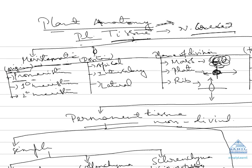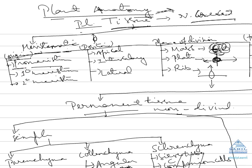On the basis of origin, the first type is promeristem, which gives rise to primary tissues. Primary meristem gives procambium and cambium cells, while secondary meristem is the cambium, which gives secondary growth. Secondary growth is found only in dicots, because dicots are the only plants that show secondary growth — monocots normally do not.